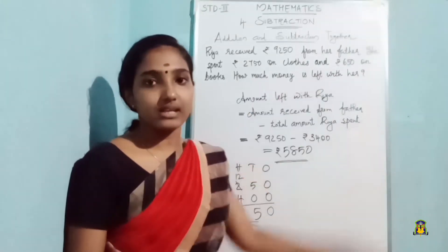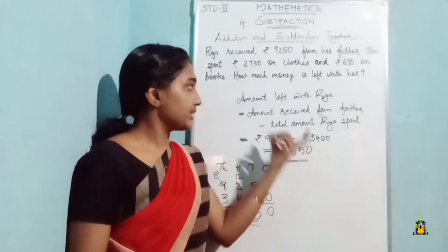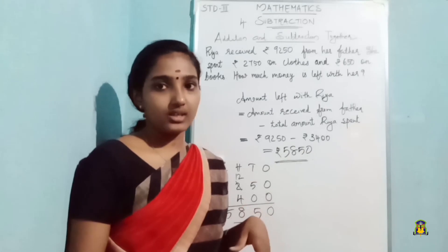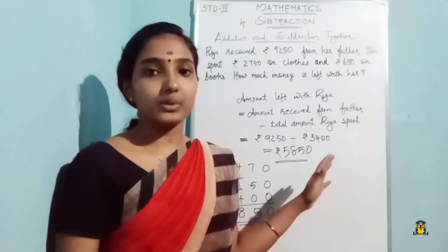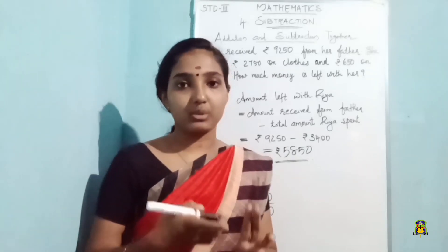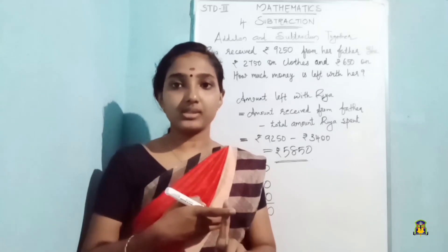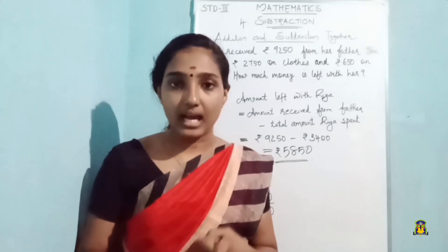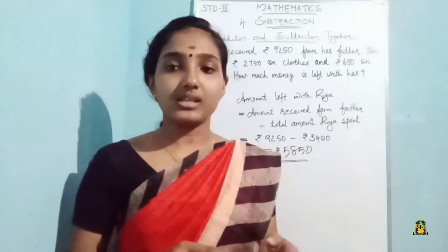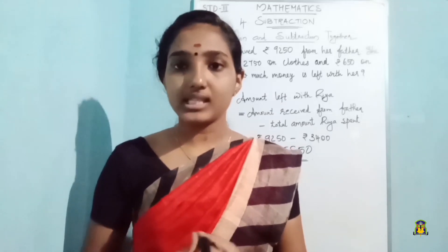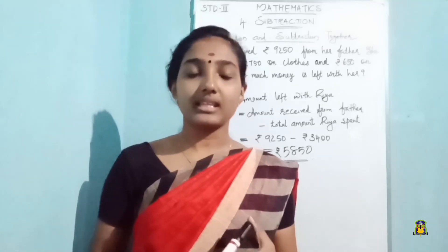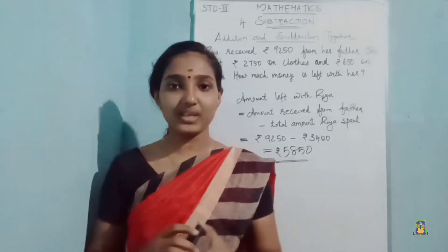Our question was to find how much money is left with Ria, and the amount left is 5850. Whenever a question like this comes, we have to first do the addition and then subtract — doing two operations in one question. I will send you the notes and homework to write neatly in your notebooks. Until then, stay safe. Thank you.